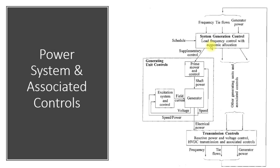The control room can signal, for example, that more generation is needed — this is secondary control, happening in the timeframe of minutes rather than seconds. Additionally, there are FACTS devices, SVCs, and other generators, each with their own controls. In simple words, when performing dynamic analysis, we need to model the controls of each and every piece of equipment in the system. Once we model all these controls, we will be able to perform dynamic studies.